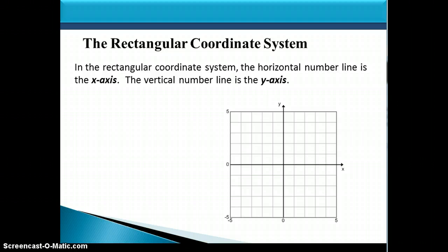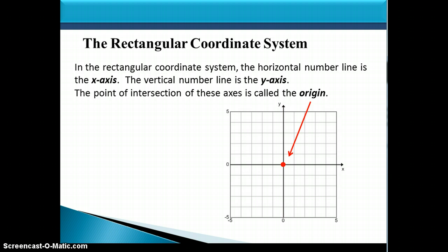When we graph linear equations in two variables, we use what's called the rectangular coordinate system. In the rectangular coordinate system, the horizontal number line is the x-axis — that's the axis that goes left and right. The vertical number line is the y-axis — this is the axis that goes up and down. The point of intersection of these axes is called the origin, and the origin would be labeled with the ordered pair (0, 0).